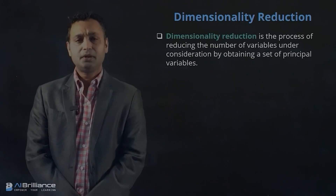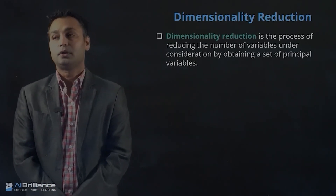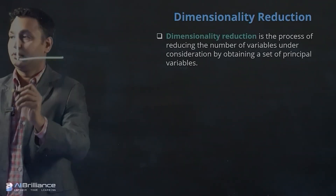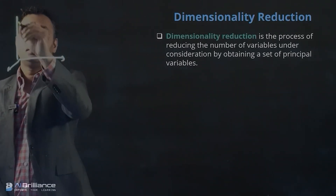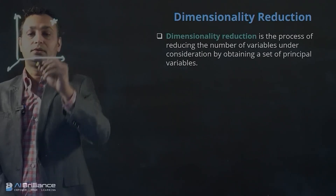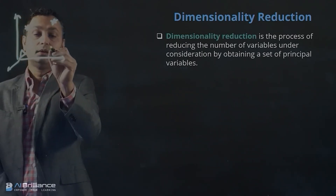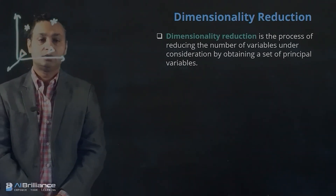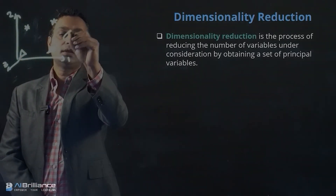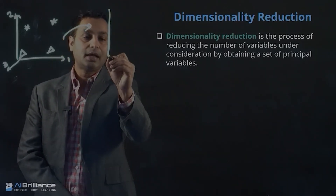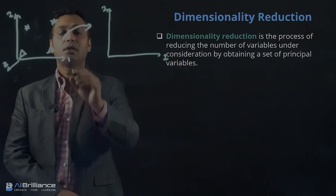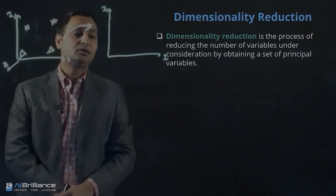Let me give you a brief geometrical intuition of what dimensionality reduction might look like. Let's say we have data represented in three dimensions — a three-dimensional data plane with some data points in those dimensions. The first, second, and third dimensions are labeled. What we are doing is taking this dataset and presenting it in a lower dimension, for example, just two dimensions — doing a transformation and projecting the data into a lower-dimensional space.